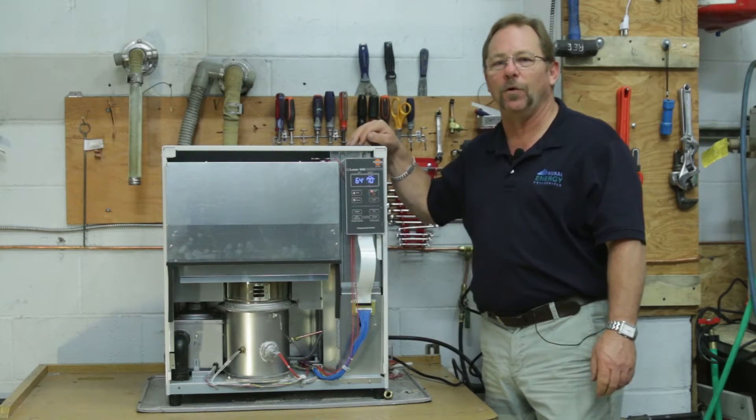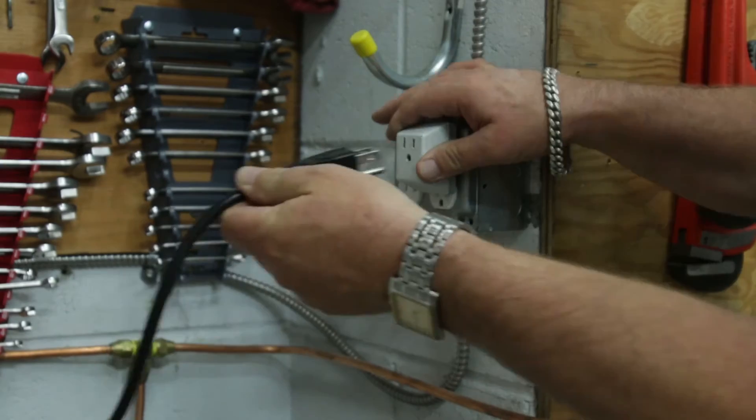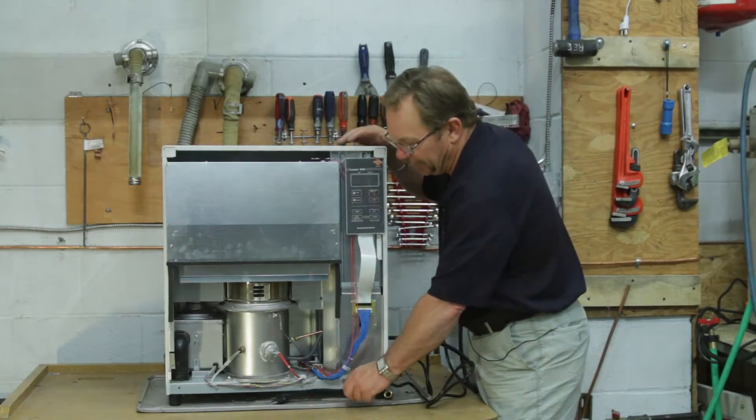The first thing we want to do is unplug the Toyotomi stove. It's really important that we unplug the stove because it's the only way we know for sure that the stove has no power in it.